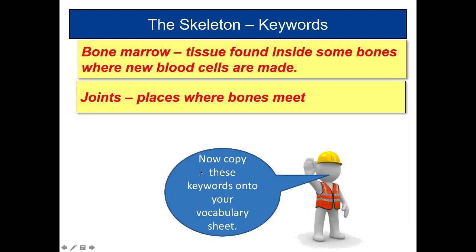Well, that is the skeleton. We've got two key words we need to know at this point. We've got bone marrow - tissue found inside some bones where new blood cells are made. And joints - places where bones meet. You need to jot those down into your books and make sure you understand those key words.